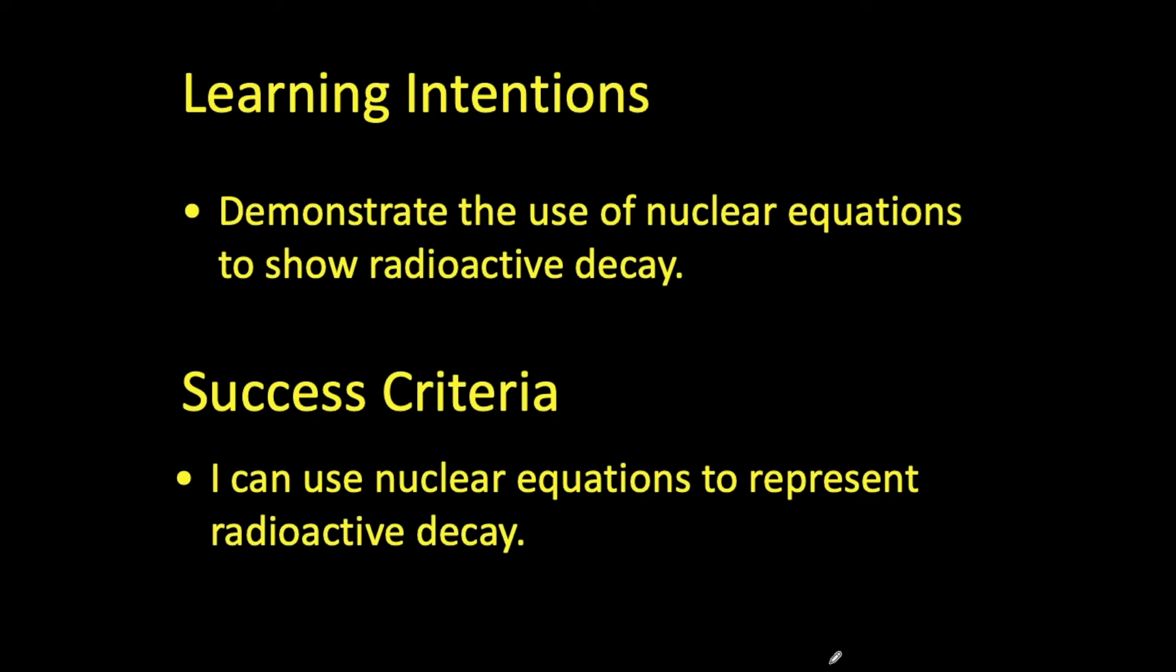So that takes us to the end of this rather short lesson today. Now the aim was for me to show you guys how to use nuclear equations to show radioactive decay. Now I hope that through this lesson you are now able to make a start at doing so yourself. So what I would like you to do is to make sure that at the end of this lesson you have your pupil booklet complete up to page 31 and that if you go to your CGP workbook, you can now complete page 68. So just once more, make sure that your notes are complete up to page 31 and complete page 68 of your practice workbooks.